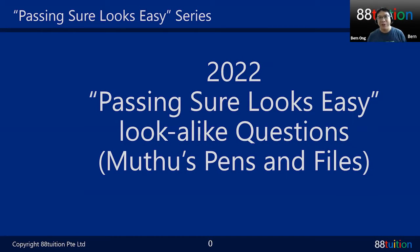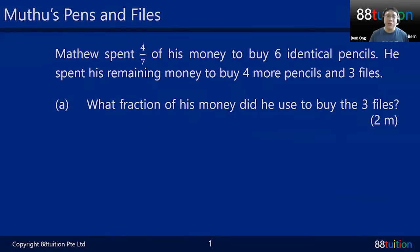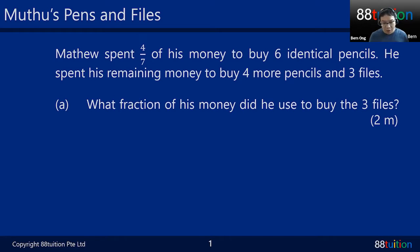Hey, welcome again to Yes Passing — sure looks easy — by Eddie Tuition, and I am Burnton, the math teacher. So let's take a look at this question. I'm going to change the name a little bit to Matthew buying pencils instead of pens. Matthew spent four-sevenths of his money to buy six identical pencils.